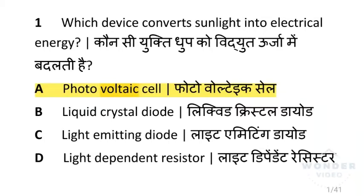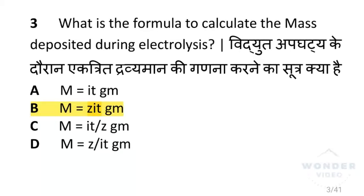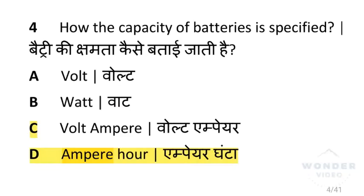We are going to see cells and batteries. Which device converts sunlight into electrical energy? That is a photovoltaic cell. Which law does a secondary cell work on? That is Faraday's law of electrolysis. What is the formula to calculate the mass deposited during electrolysis? m is equal to ZIT grams.